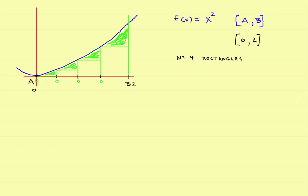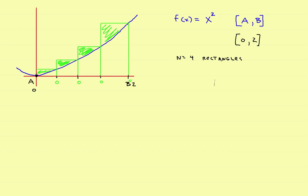Another possibility would be to use the right side in circumscribed rectangles. This time, you're going to evaluate the height of each rectangle at the right side — this point, this point, this point, and this point. Now if you do that, each one of the rectangles will be outside the curve, or circumscribed, and the problem with this is the answer is going to be too big, because the area of each rectangle is excessive. So you wind up with an answer that's too big.